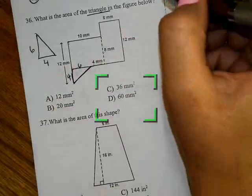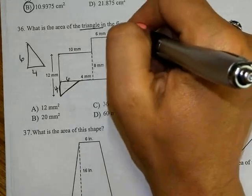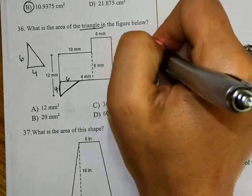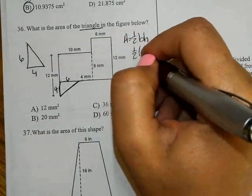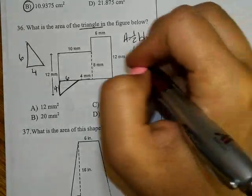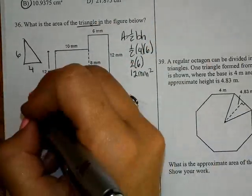And if I fill this in our formula, one-half base times height, you have one-half, 4 times 6. One-half of 4 is 2 times 6, equals 12. And it's measuring in millimeters squared. Answer A.